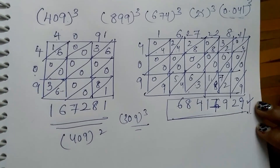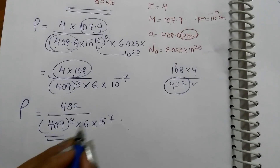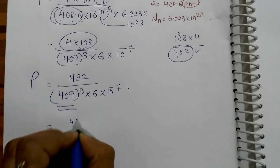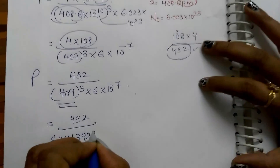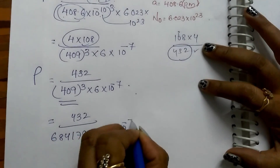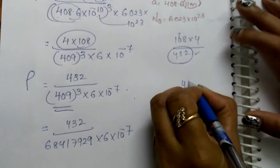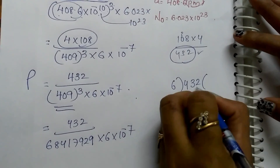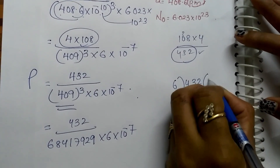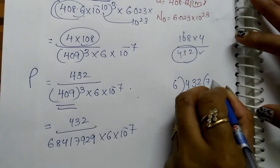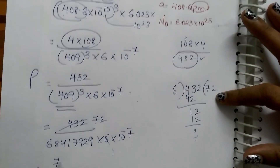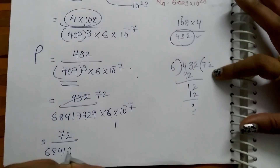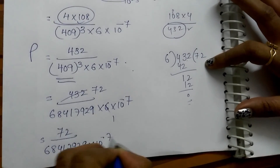Now 409 whole cube has this value. Substitute this into our formula. We got 432 in the numerator, so writing the value: 432 divided by 409³ which is 68,417,929, times 6 × 10⁻⁷. Just do 4 × 32 — wait, multiply 432 by 6: 6×6=36, 6×7=42, 6×2=12; so 6×72 gives 432, meaning numerator is 2592. Now we have: 2592 divided by 68,417,929 × 10⁻⁷, which simplifies to 72 divided by 68,417,929 × 10⁻⁷.